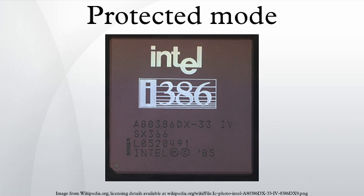The Intel 8086, the predecessor to the 286, was originally designed with a 20-bit address bus for its memory. This allowed the processor to access 2^20 bytes of memory, equivalent to 1 megabyte. At the time, 1 megabyte was considered a relatively large amount of memory, so the designers of the IBM personal computer reserved the first 640 kilobytes for use by applications and the operating system, and the remaining 384 kilobytes for the BIOS and memory for add-on devices.